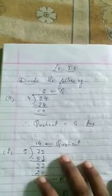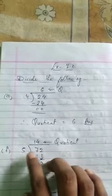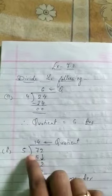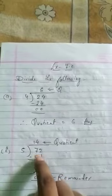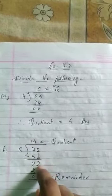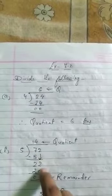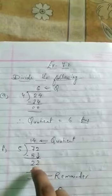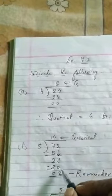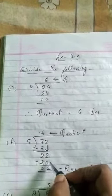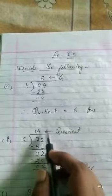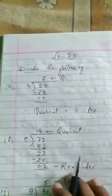Next question F. We have to divide 72 by 5. So 5 ones are 5. 7 minus 5 is 2. 2 comes down, 22. 5 fours are 20. We have to minus it. 2 minus 0 is 2. This is remainder and this is your quotient.